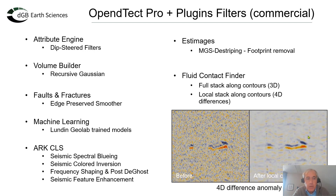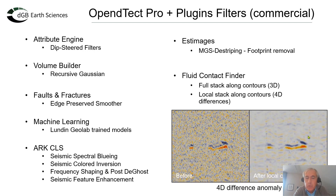In the machine learning plugin, there are a range of trained models that can be applied for different types of applications: removing random noise, removing special types of coherent noise, removing multiples, that kind of work. And then in OpenDetect we have quite a few wavelet shaping and frequency type of shaping tools. But for a real professional application, there is a set of plugins available by ArcCLS — Spectral Bluing, Color Inversion, frequency shaping — which can really push the boundaries.